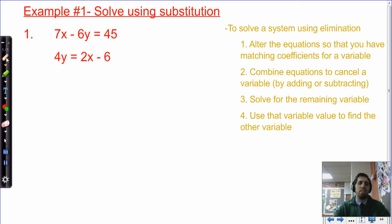Okay, that's a lot of talk. Let's see what it looks like in practice. To solve a system using elimination, first we need to alter the equation so that we have matching coefficients for a variable. So in my first equation, I have 7 as my coefficient for x and 6 as my coefficient for y. In the second, I have 4 as my coefficient for y and 2 as my coefficient for x. Now, I don't have any matching coefficients, but I know I can alter these equations. So I am thinking that I'd like to get the y's to cancel in this case, and we could really do either way. But I'm going to alter these two.